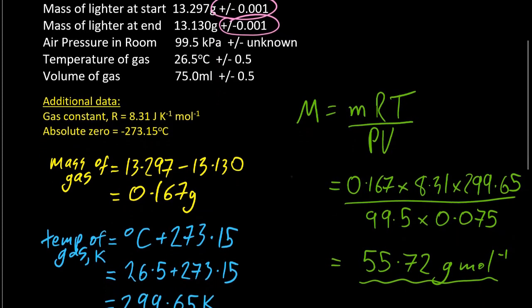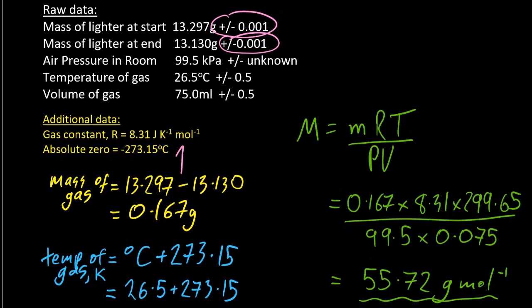So I'll do the uncertainties in pink to make it stand out. Since we're subtracting numbers, you add the uncertainties. 0.001 and 0.001 gives me 0.002. I've put the decimal places on those numbers. And the rule is that your answer must have the same number of decimal places as that which has the least in the question. So three DP, three DP. My answer should also have three decimal places. It does. It's good.